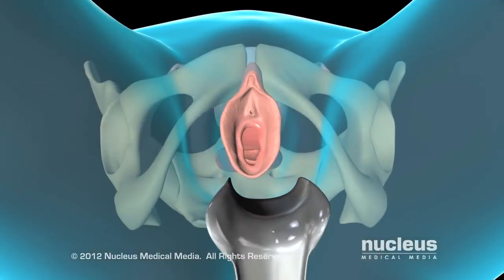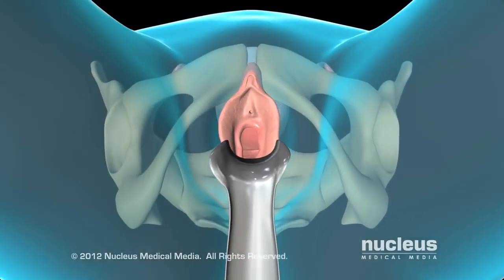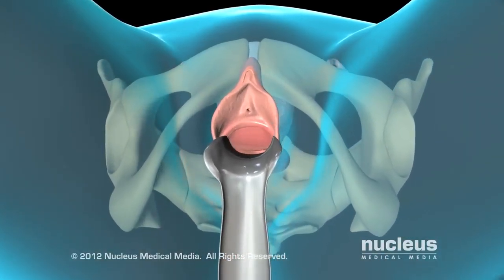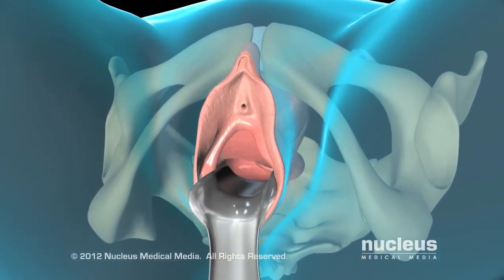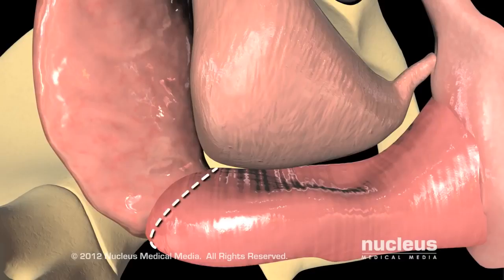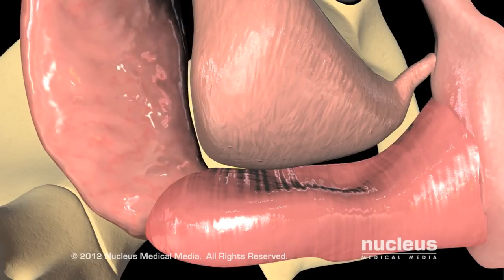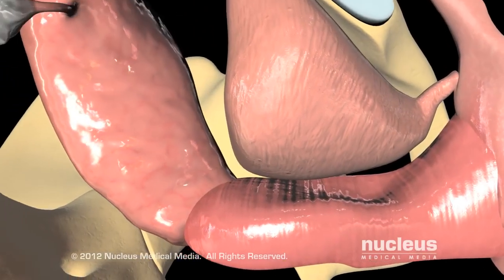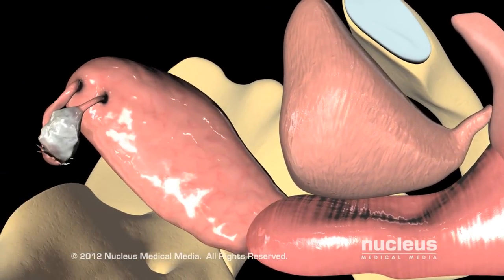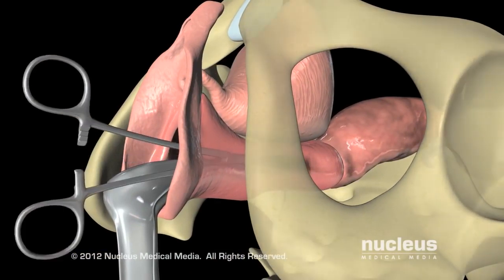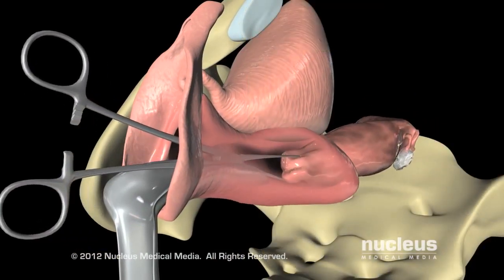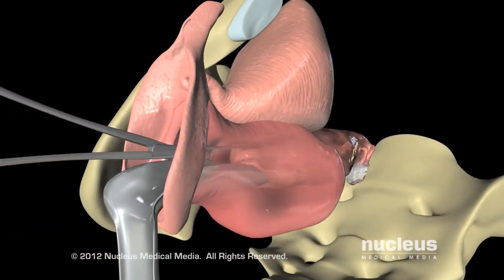For a vaginal hysterectomy, a weighted speculum is inserted into your vagina to stretch it and hold it open. Your surgeon will make an internal incision around the cervix, cut the ligaments and tissues holding the uterus in place, and slide the uterus out through the vagina.